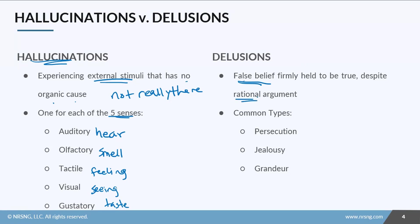Some common types of delusions are delusions of persecution, where the patient feels like everyone is out to get them — a kind of paranoia where everything everyone does is meant to harm this person. Delusions of jealousy is when they feel like their loved one is being unfaithful, even though there is plenty of evidence that tells them that's not true. They still believe that.